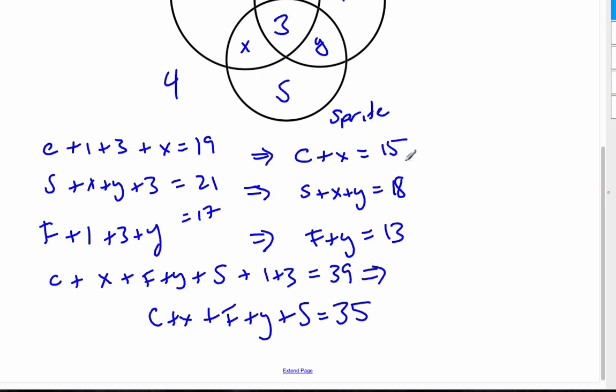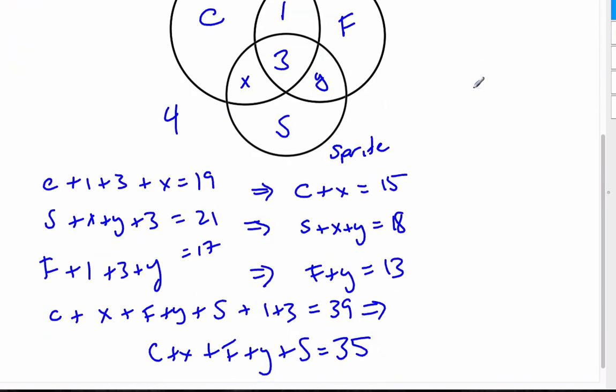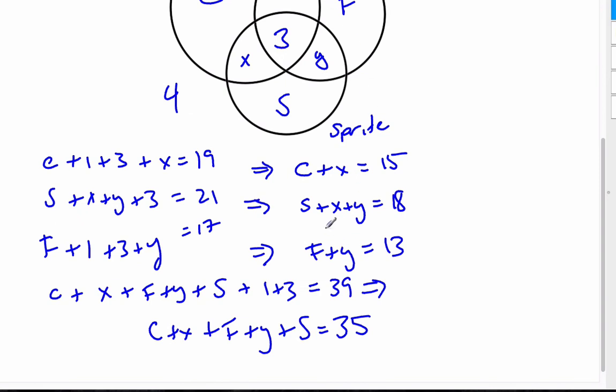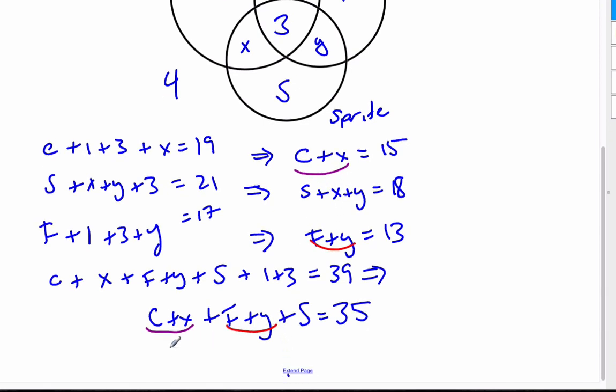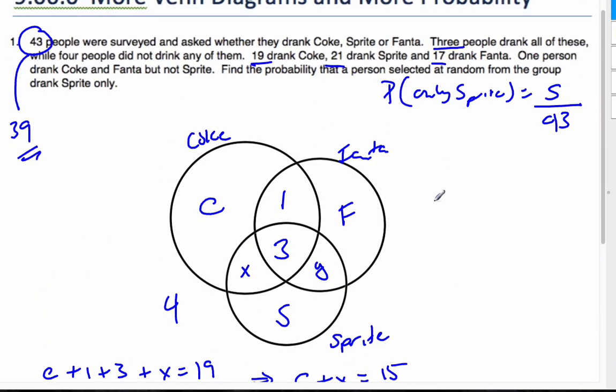So I have to remember this question. I'm looking to try and find what S is here. And so in order to find it, what I recognize is that C plus X is here. I can also see F plus Y is here. So if I do a substitution for all of those, I end up with 15 plus 13 plus S is 35, which then says S is equal to 7. And so to answer the probability question that's there, that's going to be 7 divided by 43. So that is my final answer in this specific case.